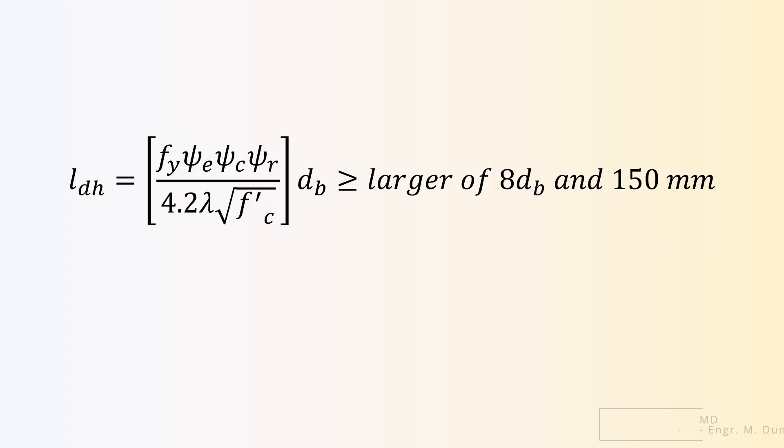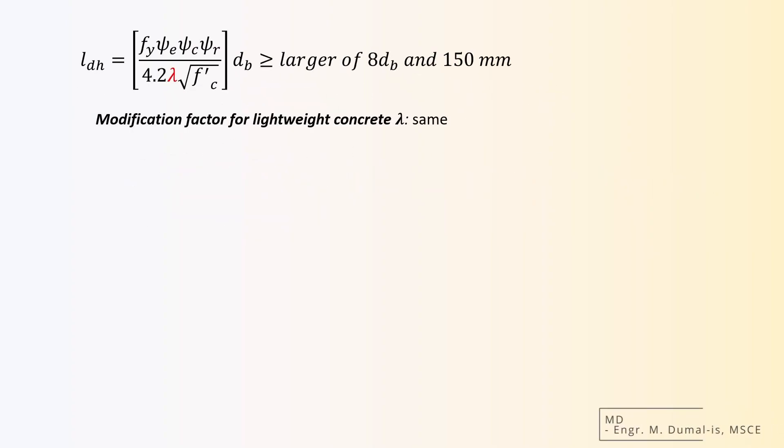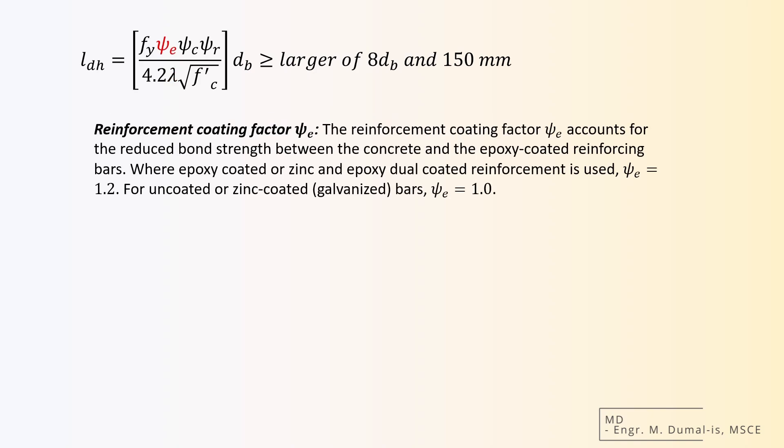The formula for Ldh is similar to Ld and Ldc. Lambda will still be the same for lightweight and normal weight concrete. Next is ψe, the reinforcement coating factor. This is like what we have in tension development length, but ignoring small concrete cover or less rebar spacing. Therefore, the values are just 1.2 and 1.